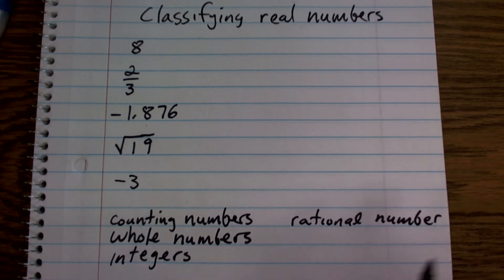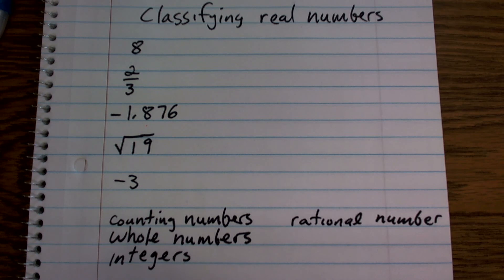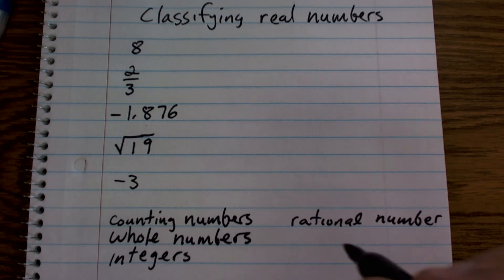And then if a number did not fit a rational number, it was not a counting number, not a whole number, or not an integer, then we said it was an irrational number.